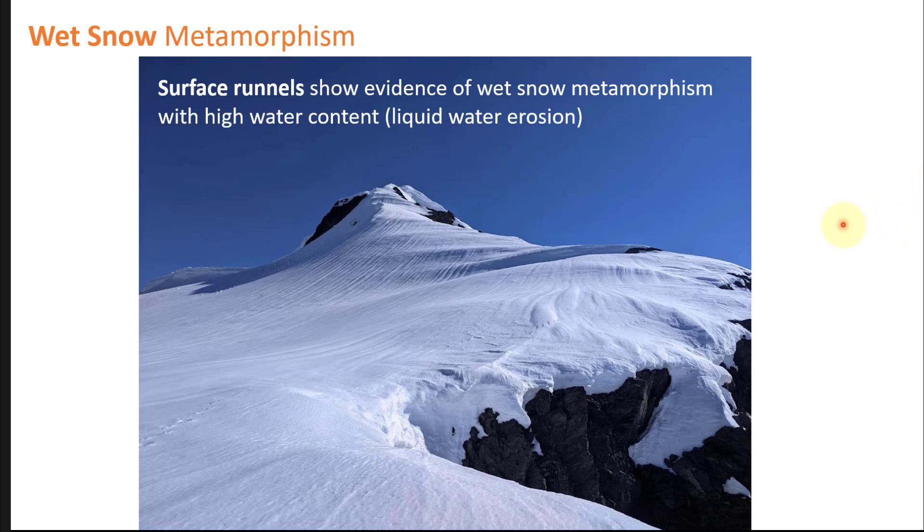Last thing I want to mention with wet snow metamorphism is you can typically find significant evidence by looking at the surface bedforms of the snowpack. This is a photo I took in the Chugach range a few years ago showing these things called surface runnels. Runnels are channels that form naturally in the surface of the snowpack and you often see these on aspects that have significant sun exposure. A similar phenomenon is sun cups. This is evidence of lots of liquid water erosion flowing or pooling on the surface of the snowpack as the deeper snowpack is undergoing wet snow metamorphism. If you aren't looking at grain types, you don't have your loupe, you can identify this by macroscopic evidence simply by looking at the bedform structure of the snowpack like this.